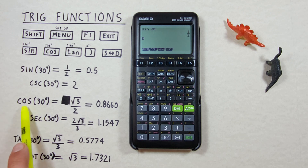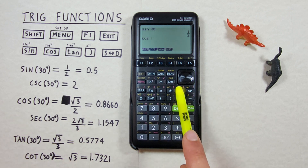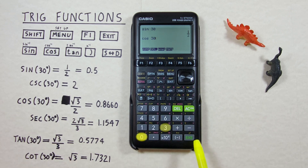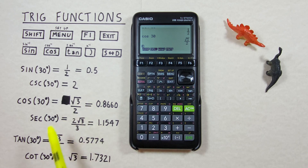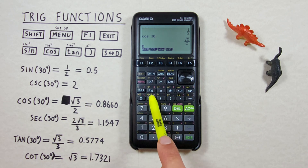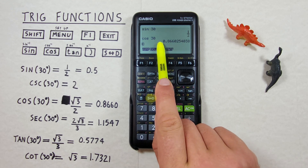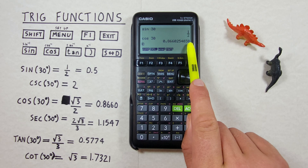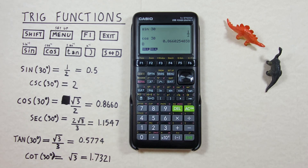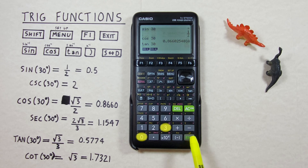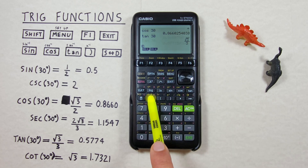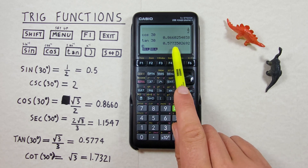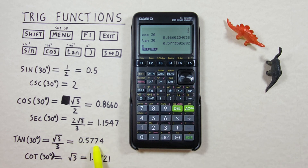For cos we do it the same way. If we want to find cos of 30 degrees we hit cos, 30, EXE, and we see we get a fraction of square root of 3 over 2. If we want to convert that to a decimal we hit the STD key and get 0.8660 etc. For tan we do it the same way — tan of 30 degrees, hit tan, 30, EXE, and we get a fraction of square root of 3 over 3, which we can convert to 0.57735 etc., or 0.5774 rounded.